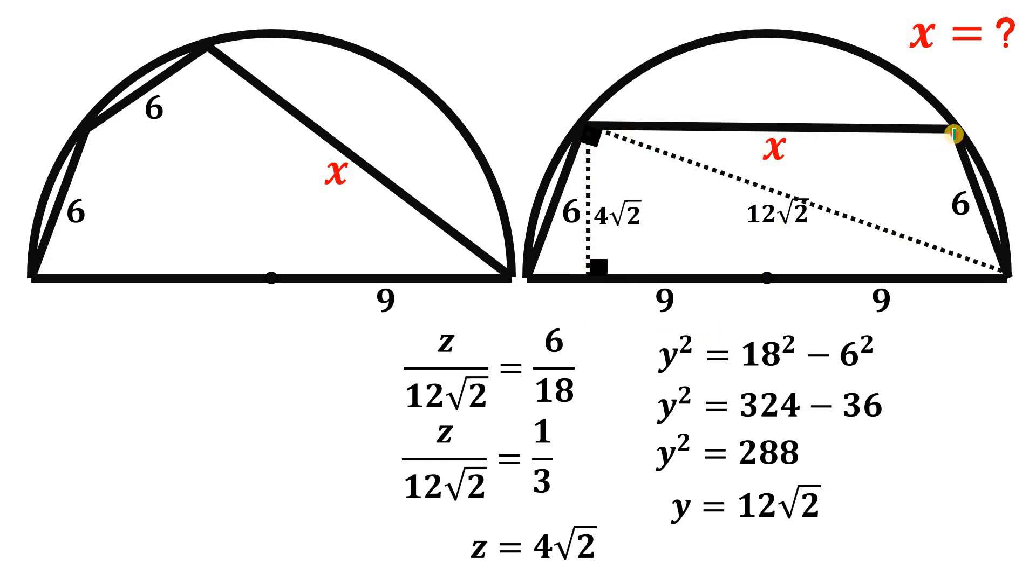Now from here, what we're going to do is from this point, let's drop again another perpendicular line. Now by symmetry, these two segments are technically the same thing. So let's call this as a and the other one is a.